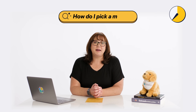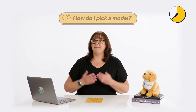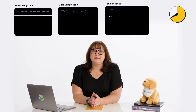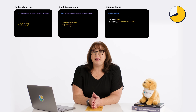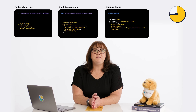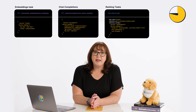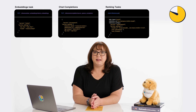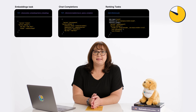How do I pick a model? Like we say here at Elastic, it depends on your use case. Elasticsearch offers two great models for vector search out of the box: E5 and ELSER. E5 is great for multilingual support, and ELSER is a state-of-the-art sparse embeddings model that is great for English language text expansion.